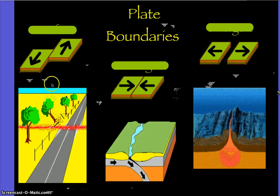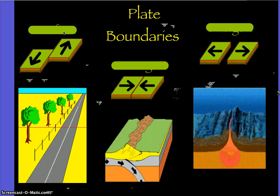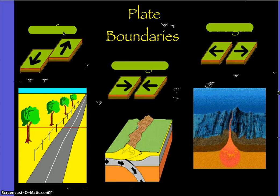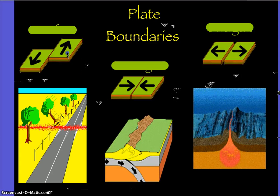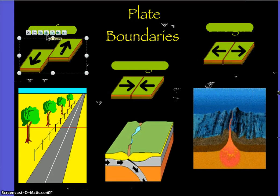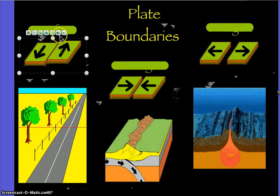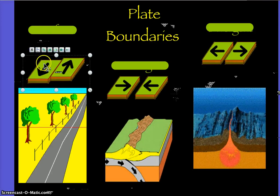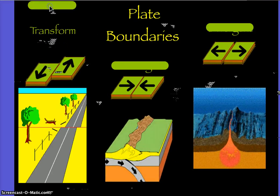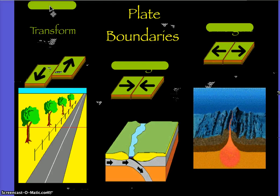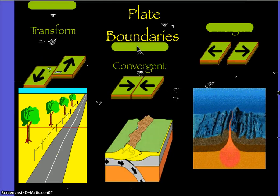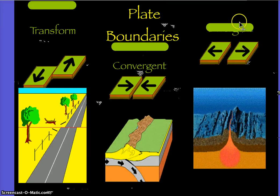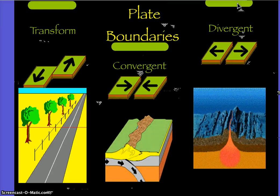When the plates shift in opposite but parallel directions, that's a transform boundary. If they come together, it's convergent — C for come together. Divergent means divide — the plates move apart.